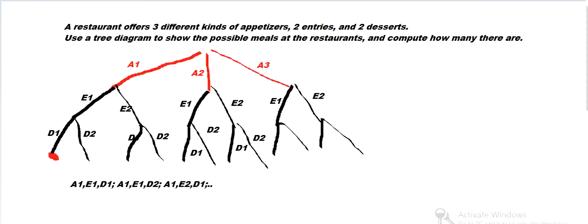This represents A1, E1, D1, because that's how we get there. And that means there's 12 total nodes at the bottom. So we can count up: 1, 2, 3, 4, and so on.